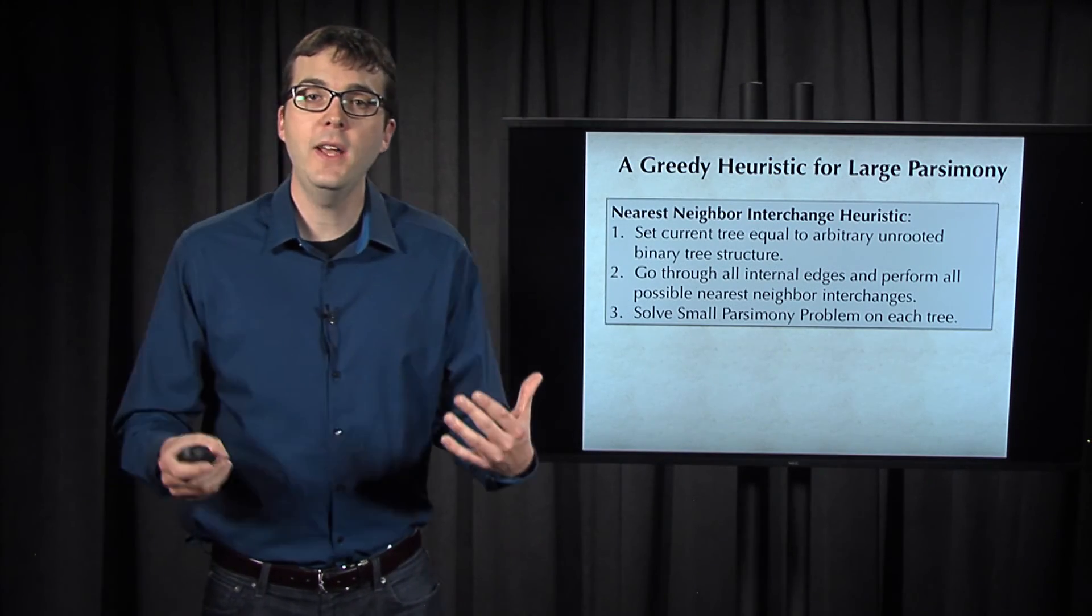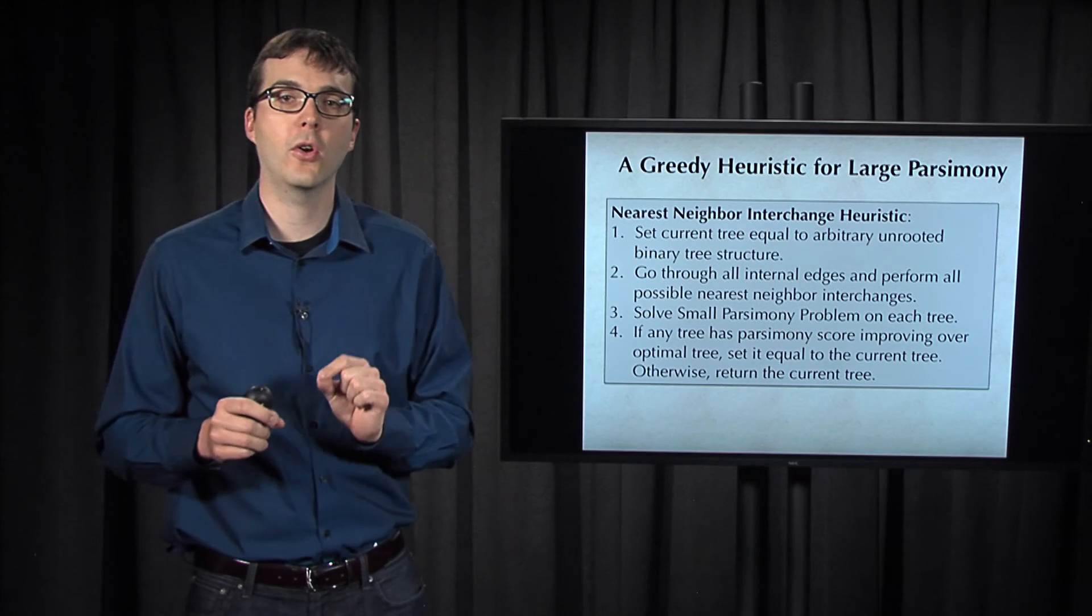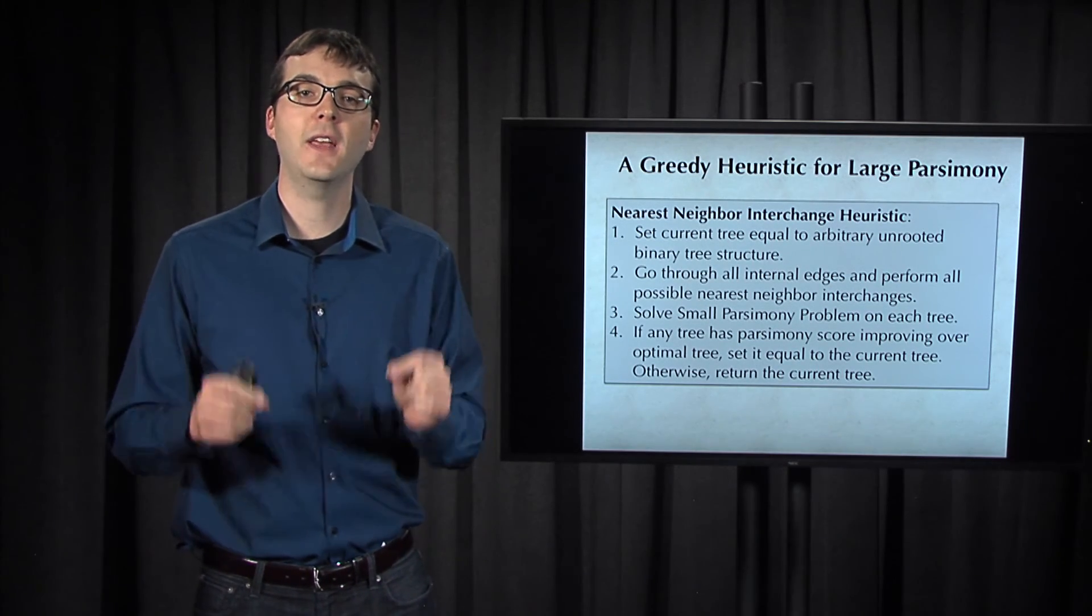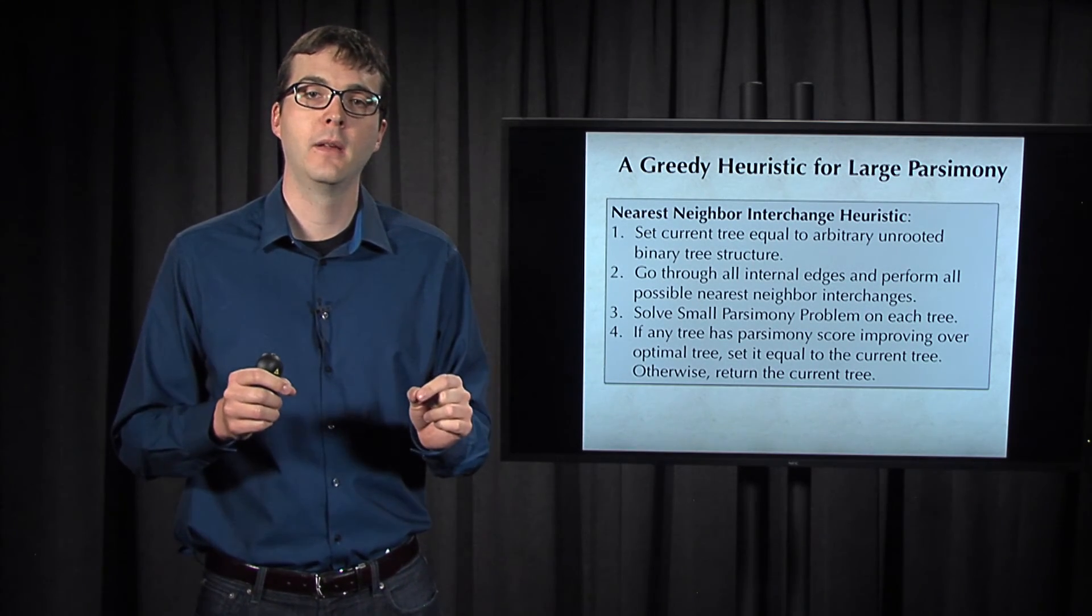Now if we find a tree whose minimum parsimony score improves over the current tree that we have, then we set the current tree equal to this tree and we iterate.